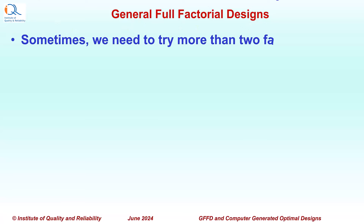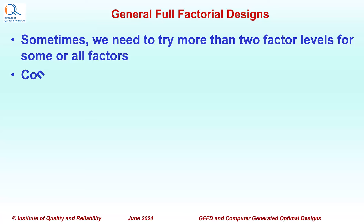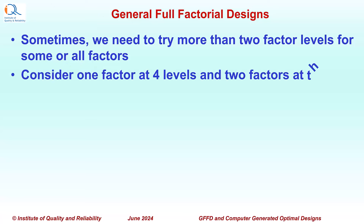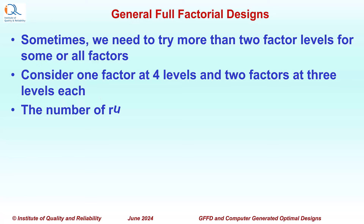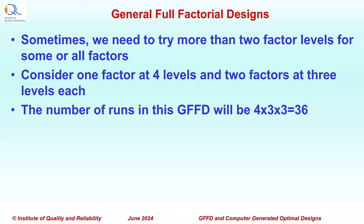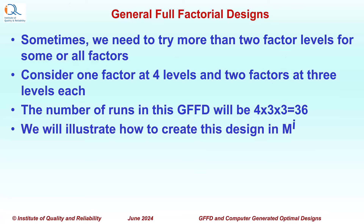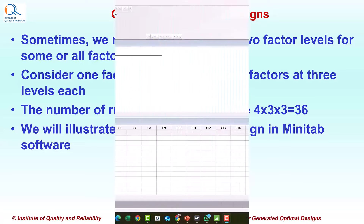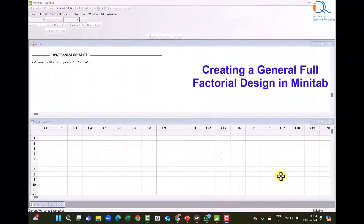Sometimes we need to try more than two factor levels for some or all factors. Consider one factor at four levels and two factors at three levels each. The number of runs in this general full factorial design will be 4 times 3 times 3, which is 36. We will illustrate how to create this design in Minitab with 3, 3, and 4 levels of factors.